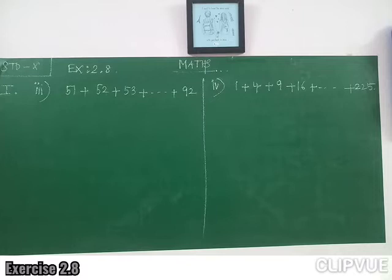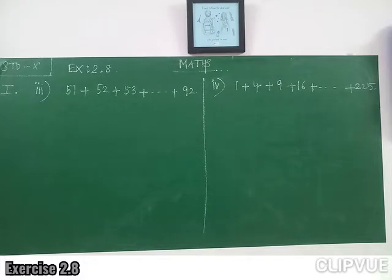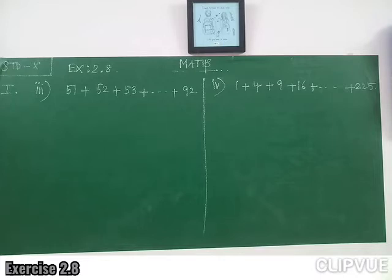Third subdivision: 51 plus 52 plus 53 plus and so on plus 92. Here the terms are consecutive, but it does not start from 1. So we cannot apply the formula n(n+1) by 2 directly.